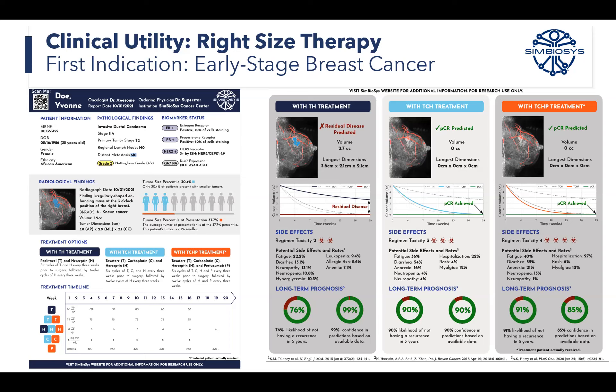PCR — pathological complete response — is known to be an important prognostic marker in early-stage breast cancer, defined as the disappearance of the tumor after neoadjuvant therapy. With each therapy option, you can see the likelihood of achieving complete response, the likelihood of recurrence, and the toxicity or risk of each therapy, so that shared decision-making can be had more thoughtfully.